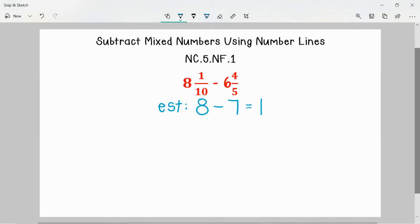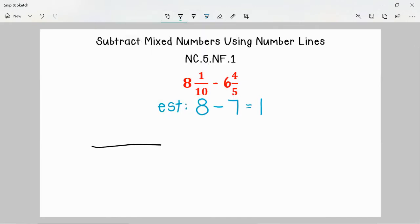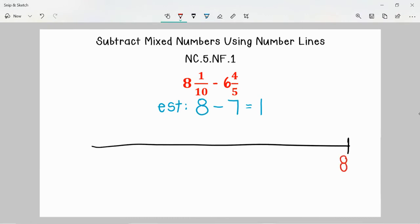So to begin to solve we are going to draw an open number line. I am going to start at the end here with the amount that we are subtracting from which is 8 and 1 tenth. Now I know that I need to subtract 6 and 4 fifths from 8 and 1 tenth. The first thing I can do is just go ahead and subtract the 6 wholes. So if I subtracted 6 wholes from 8 and 1 tenth I know I would be at 2 and 1 tenth.